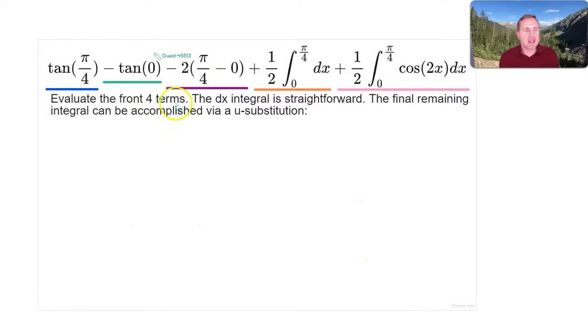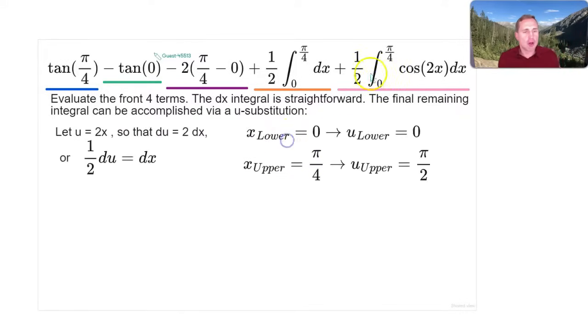How about this last integral? So let's evaluate each of these four terms in the front to simplify them. So separately in blue, green, purple, we'll evaluate those. This orange term, it's just going to integrate to x. We're going to put in the bounds. It's straightforward. This final remaining integral can be accomplished via u substitution. Now there are other ways to do it. That's probably the most straightforward way.